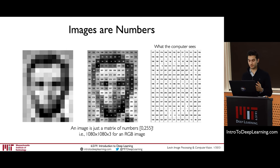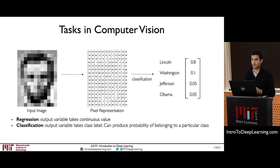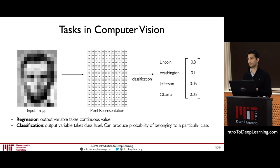Now we have a way to represent images to computers and we can start to think about what types of computer vision algorithms we can perform. There are two very common types of learning tasks: regression, where the output takes the form of a continuous value, and classification, where it takes a single class label.